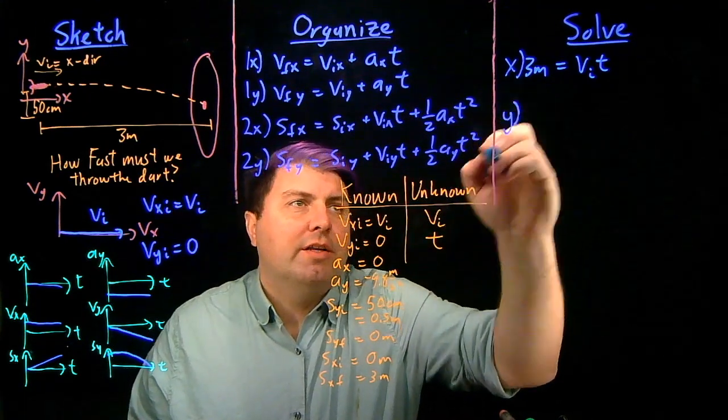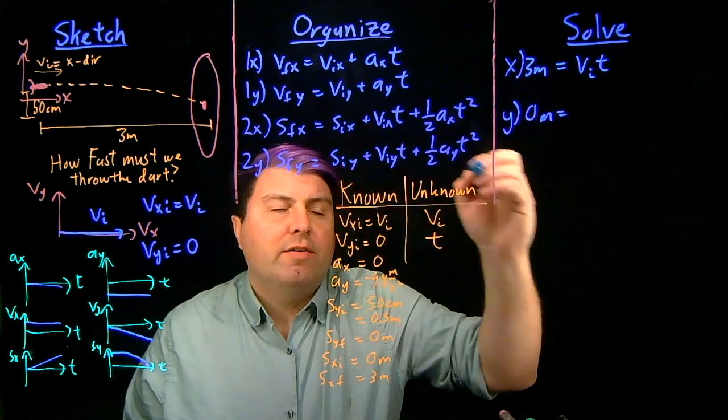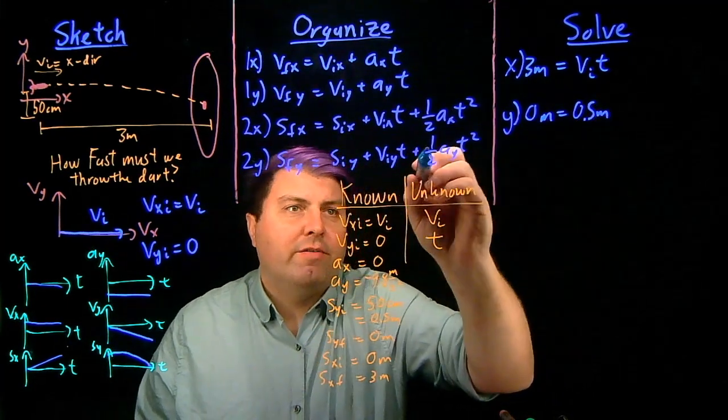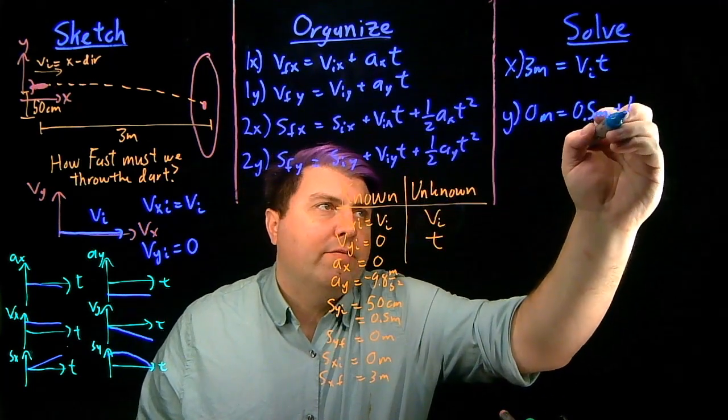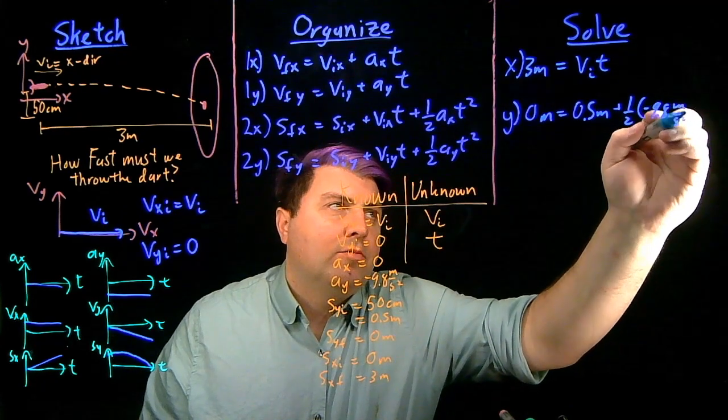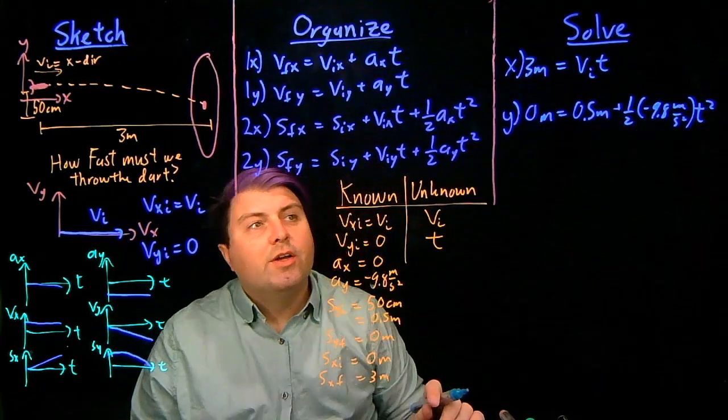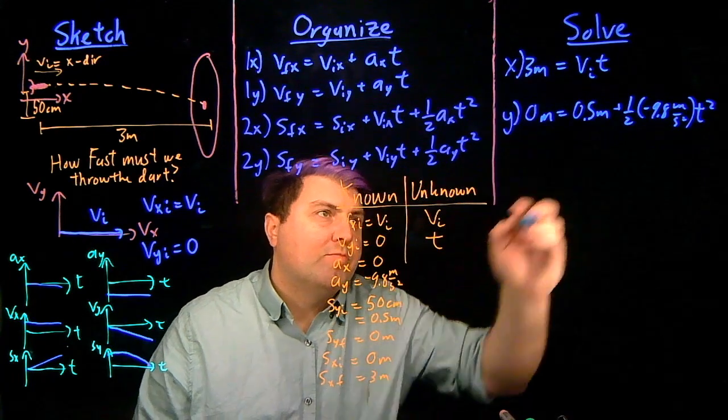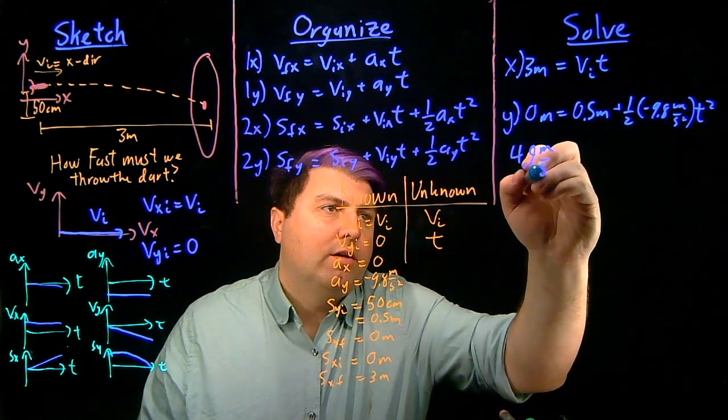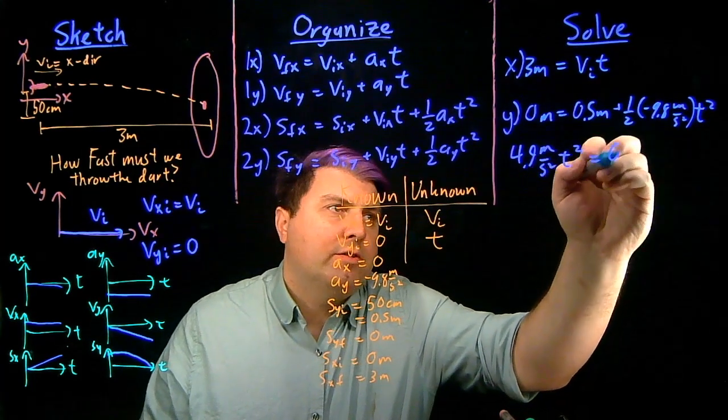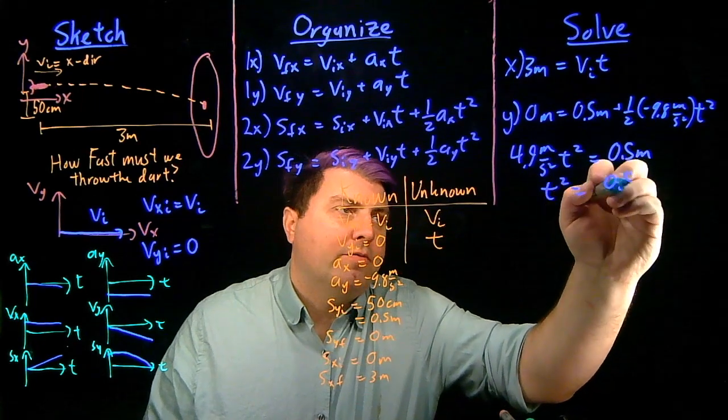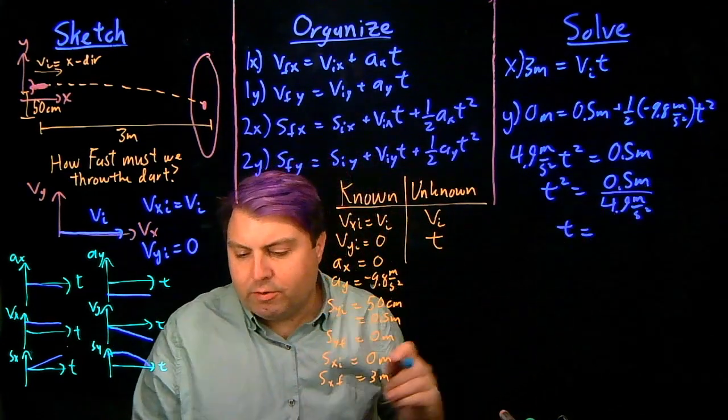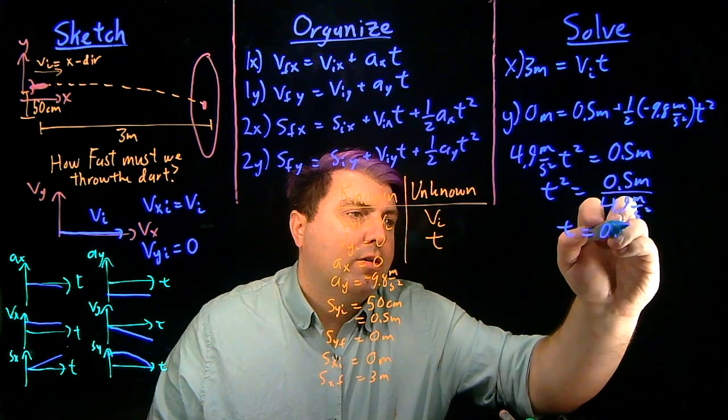But let's look at the y direction then. My final position is zero meters. My initial position in the y is 0.5 meters. My initial velocity in the y is zero, so we're not going to write it. And then I have plus one-half times negative 9.8 meters per second squared times the time squared. So in my equation y, I don't have a second unknown. I can just solve for my time by bringing this over here. So I have 4.9 meters per second squared times t squared equals 0.5 meters, which gives me a time of 0.32 seconds.